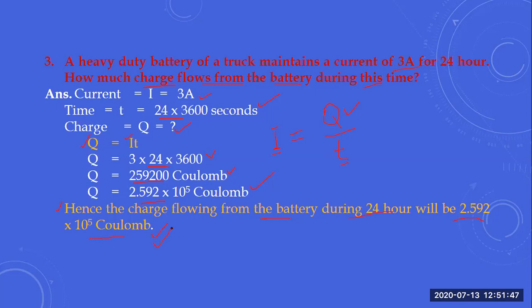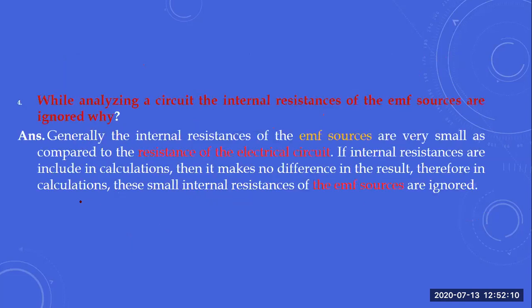To summarize this technique: you only need to know the time through which the charges pass and how much current was flowing during that time. Then you can calculate the number of charges which have passed.